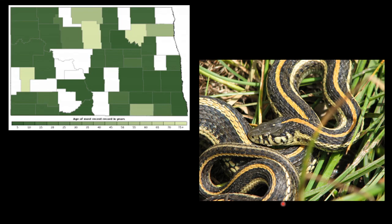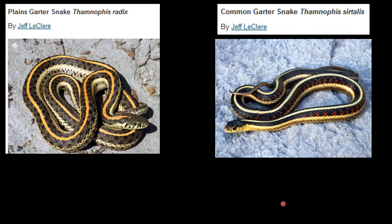The plains garter snake is found throughout most of the state. There are areas where we find both species, but habitat often distinguishes between them — eastern or common garter snakes tend to be more closely associated with aquatic or moist habitats, while plains garter snakes tend to be more associated with drier prairies. Here we see radix on the left and the common garter snake on the right — both have a black to dark green background and three yellowish stripes, but the common garter snake often has red and no black bars on the lips.